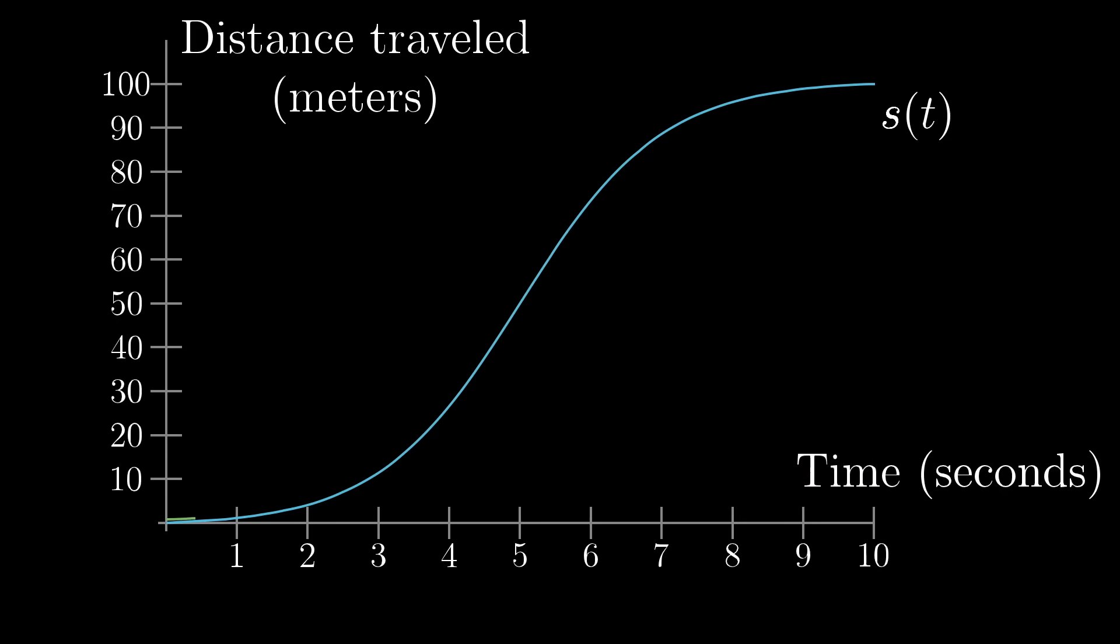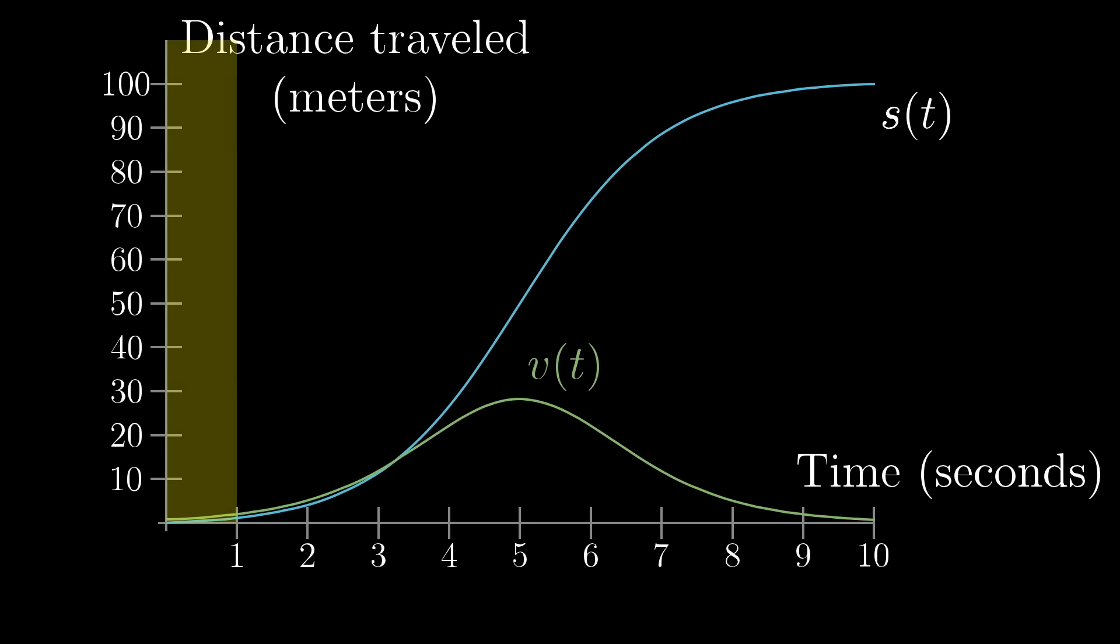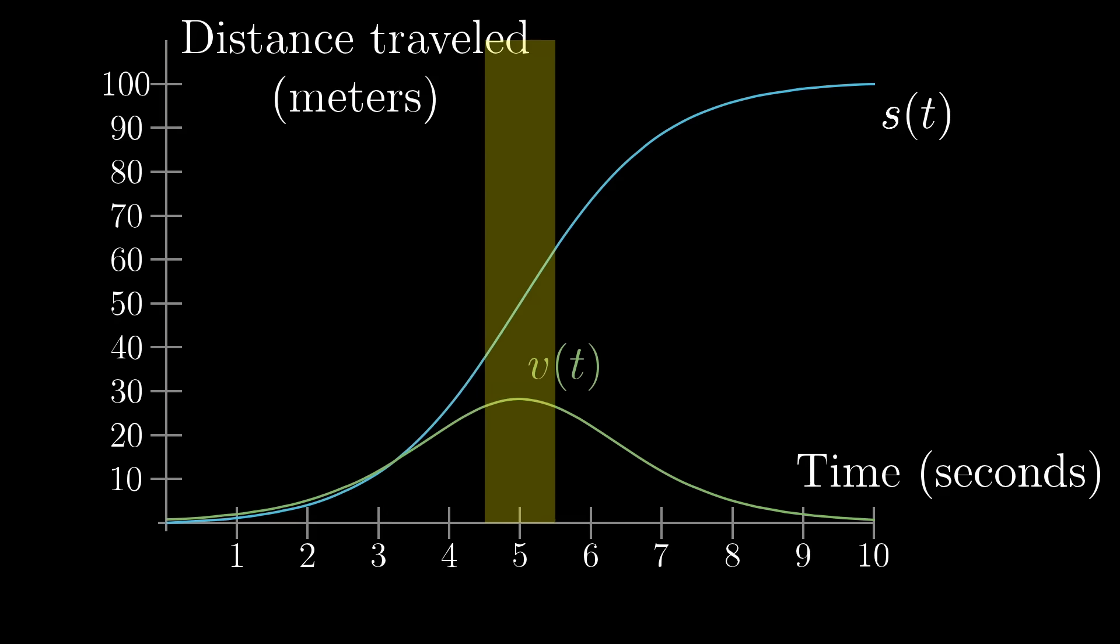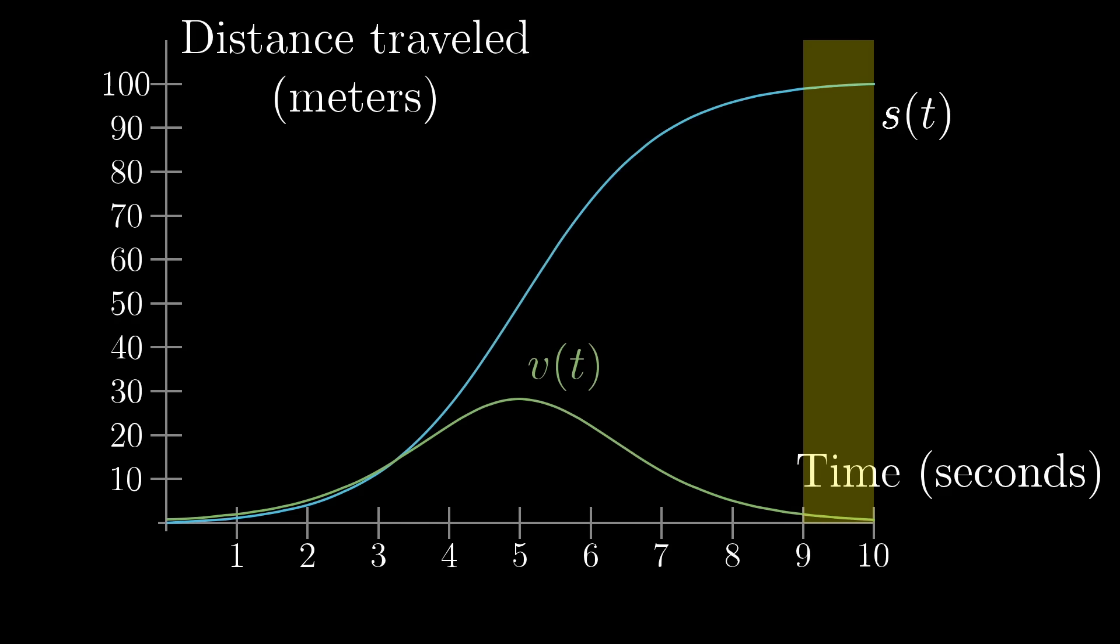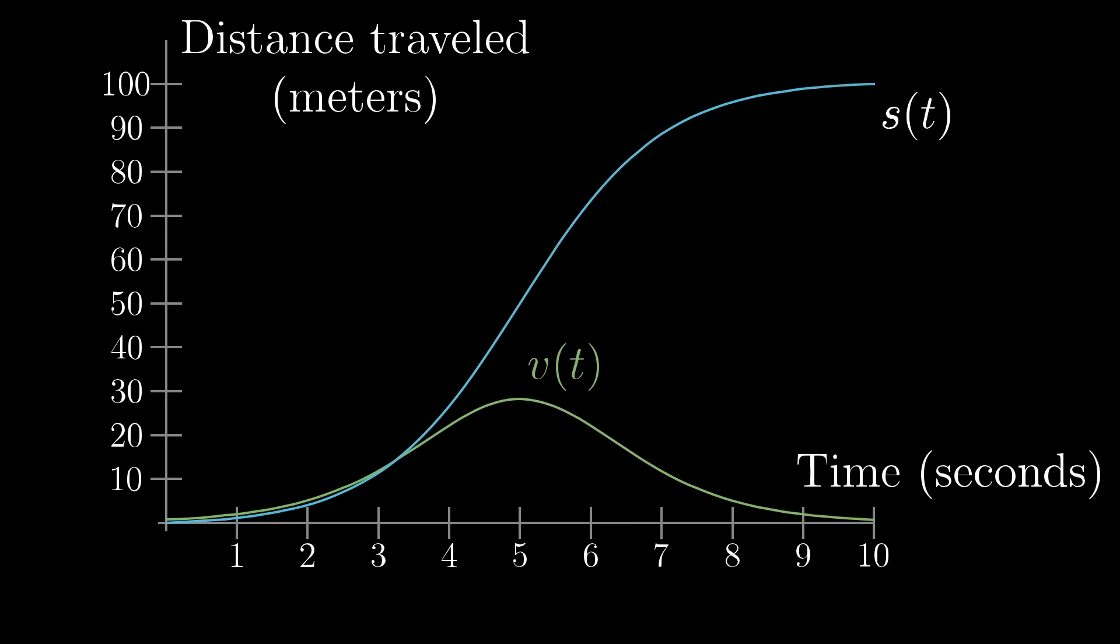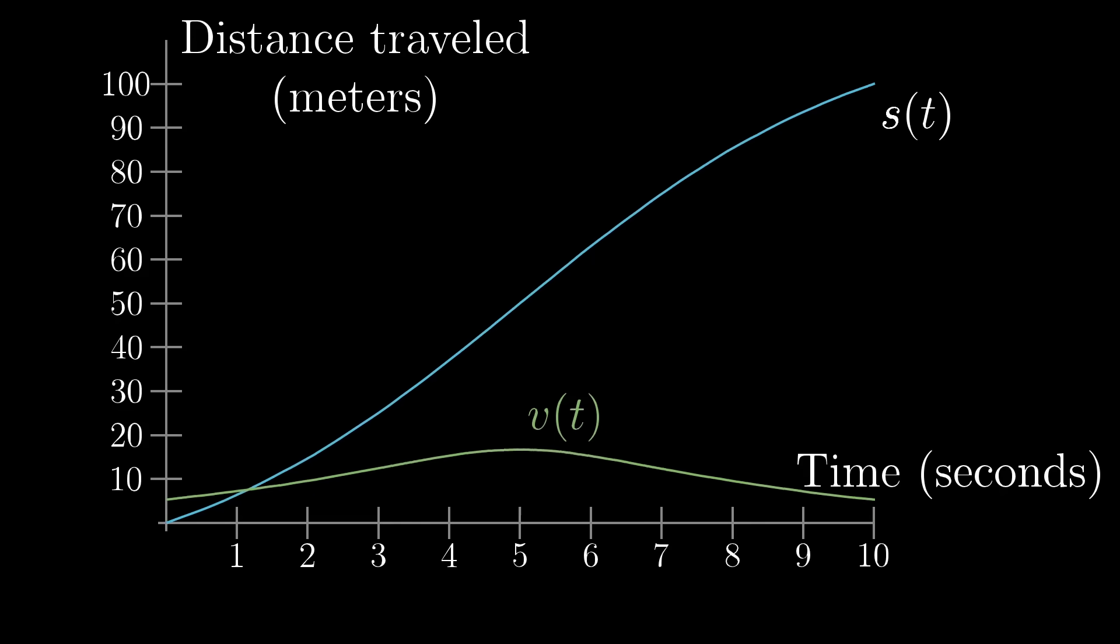And if we were to plot the car's velocity in meters per second as a function of time, it might look like this bump. At early times the velocity is very small. Up to the middle of the journey, the car builds up to some maximum velocity, covering a relatively large distance each second. Then it slows back down towards a speed of zero. And these two curves here are definitely related to each other. If you change the specific distance vs. time function, you're going to have some different velocity vs. time function.